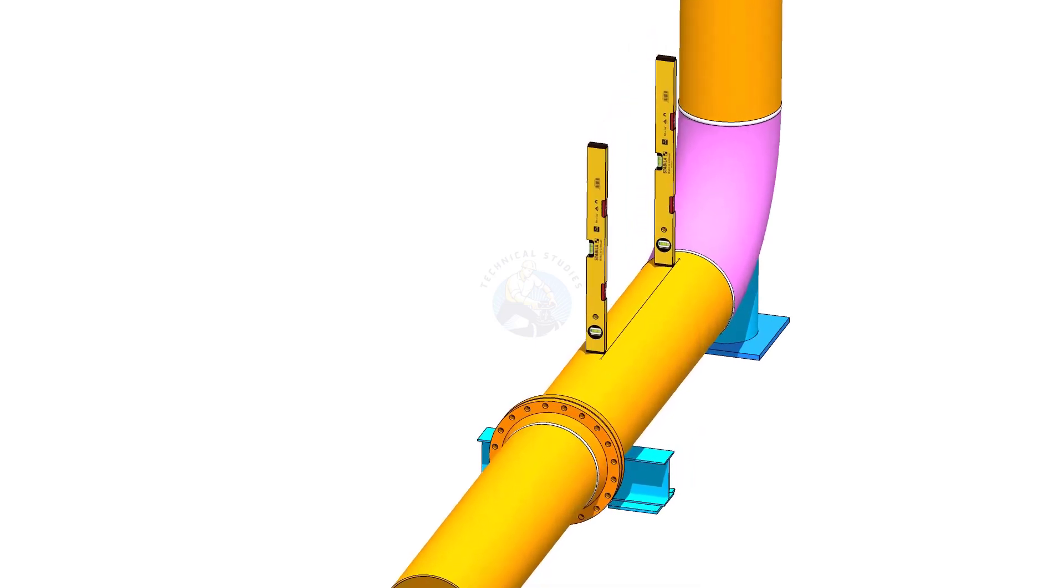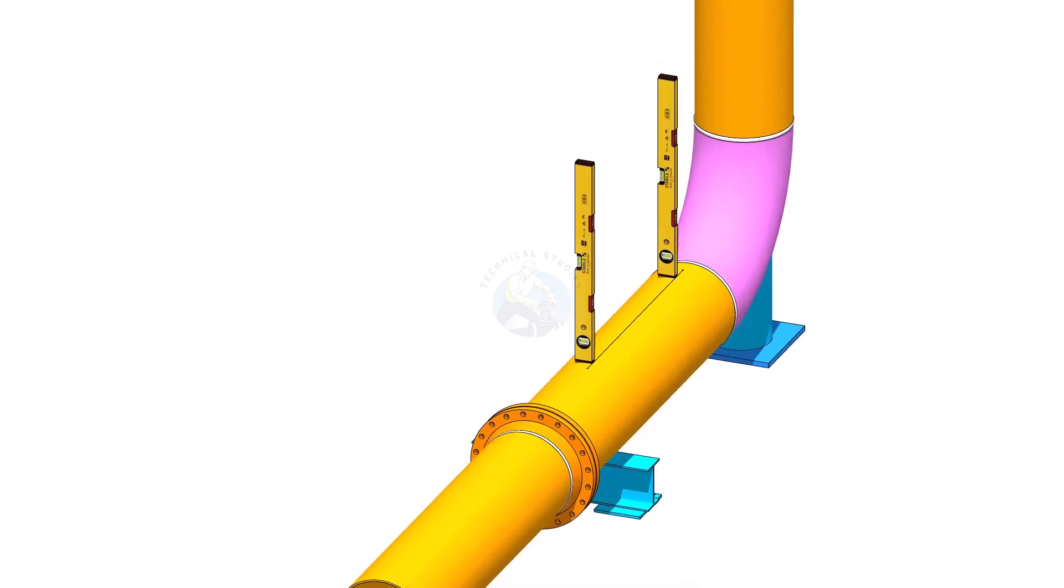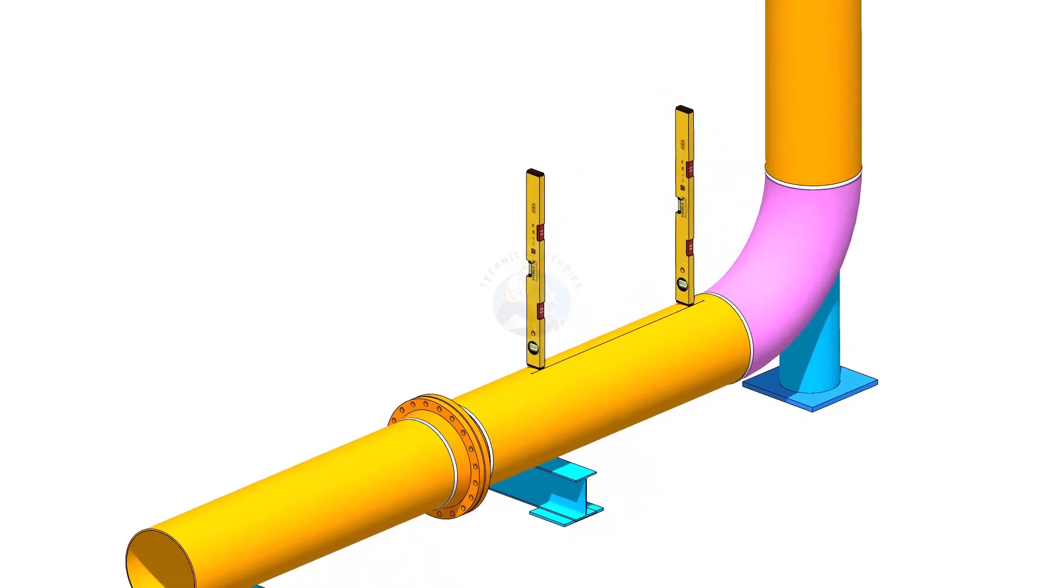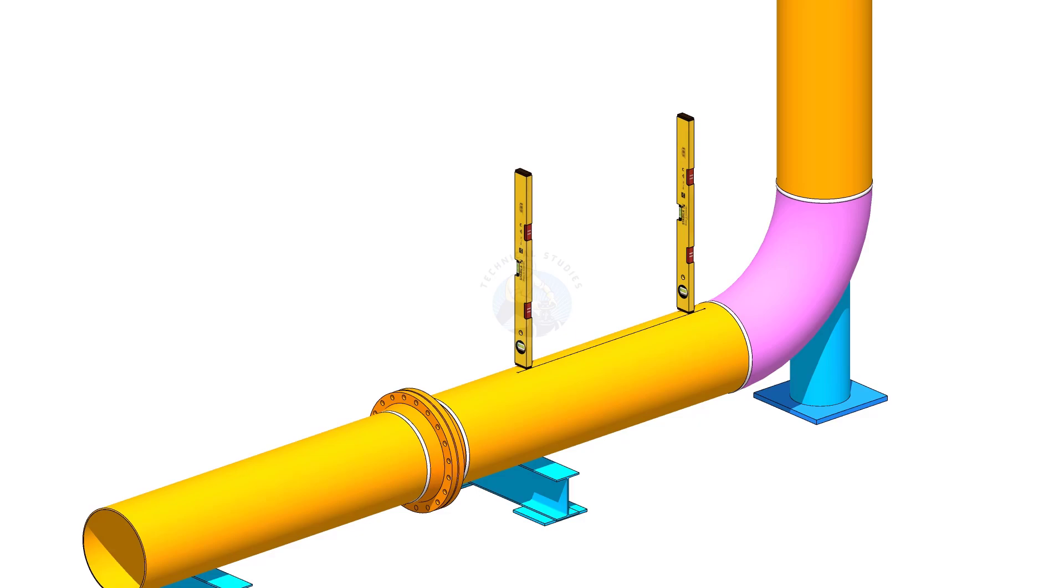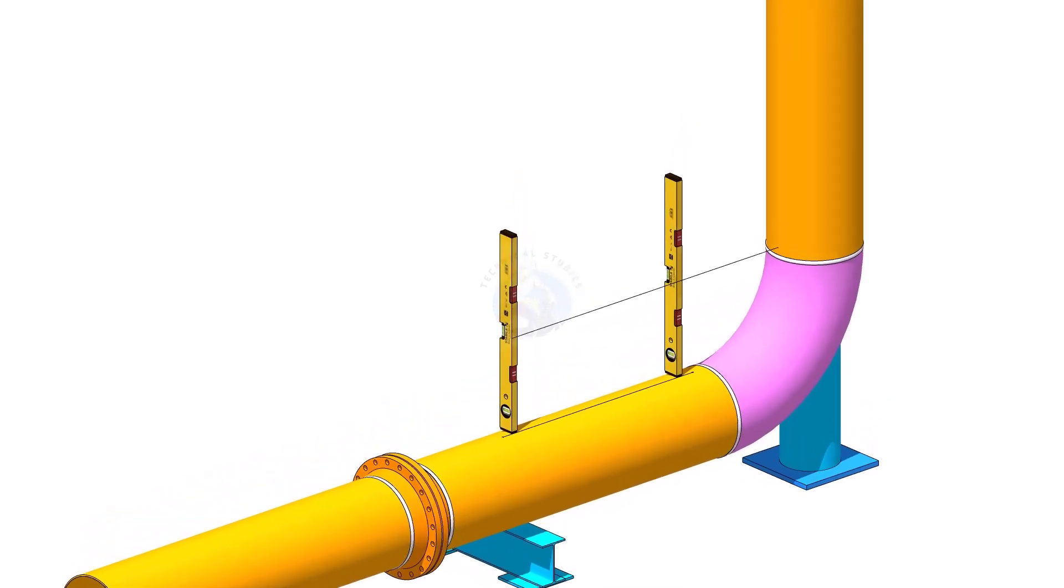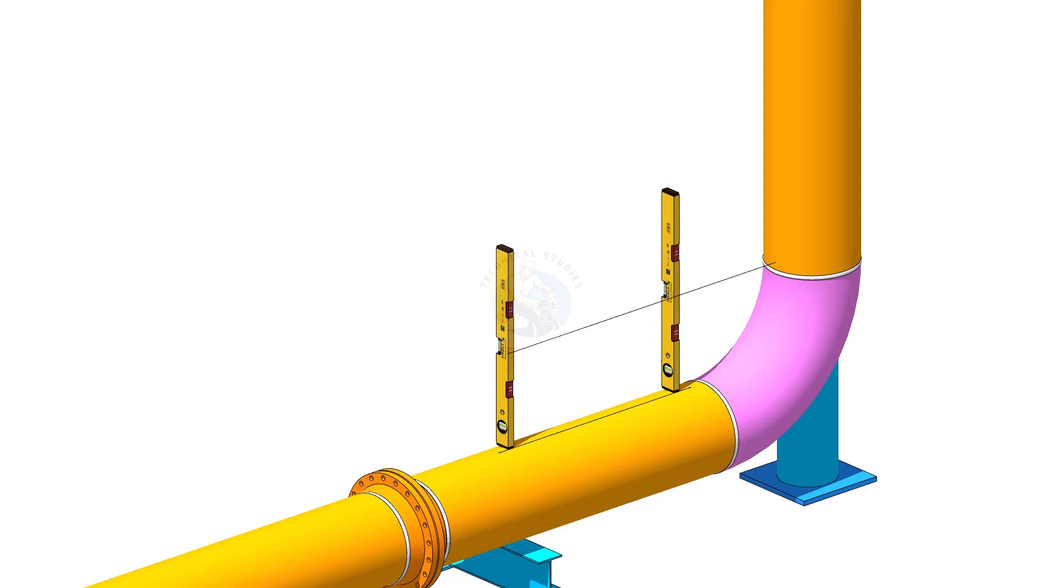Hold two level bottles on the line vertically as shown. Transfer the levelness on the vertical pipe on two locations as shown. You can use line thread or a straight edge.